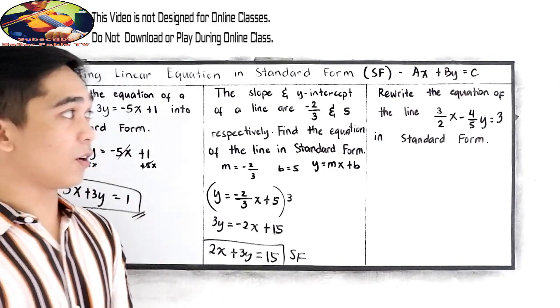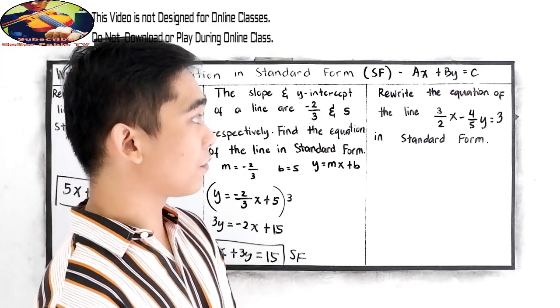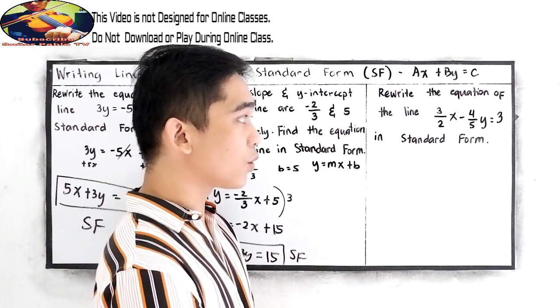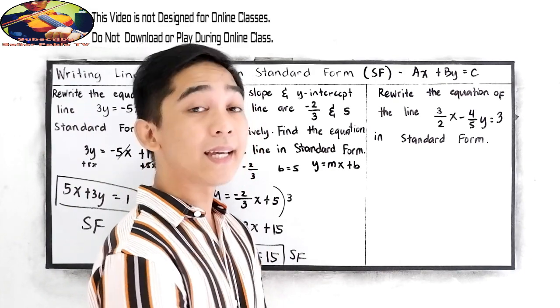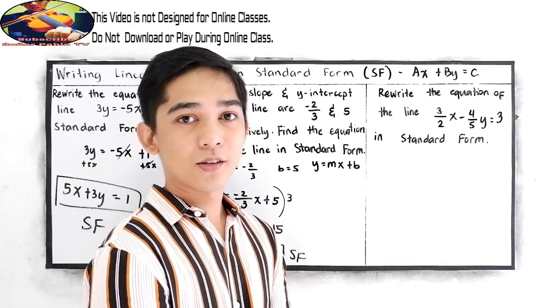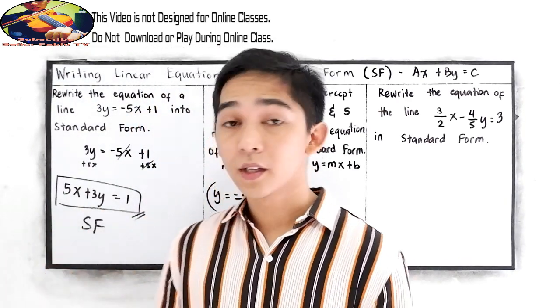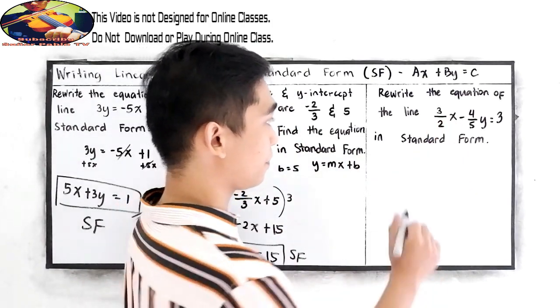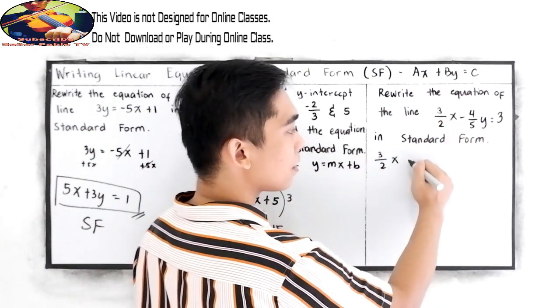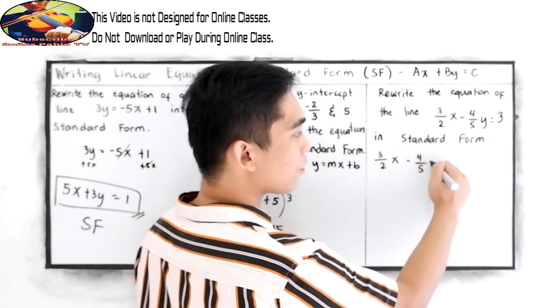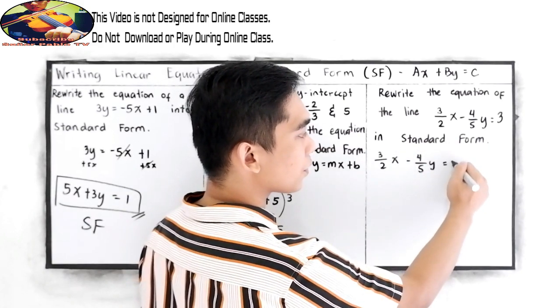Now our last example. We're writing the equation of the line 3/2 x - 4/5 y = 3 in standard form. Just like in example number 1, copy the given: 3/2 x - 4/5 y = 3.